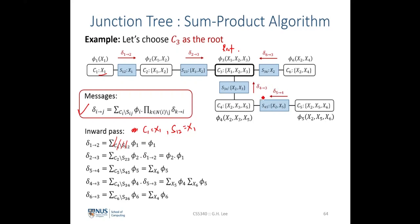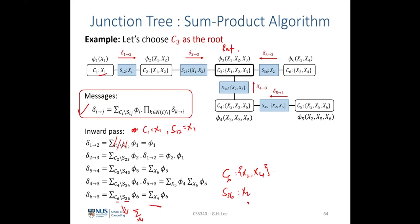For the message delta_6,3 from clique C6 towards C3: C6 contains x2 and x4, and the subset S3,6 linking C6 and C3 is just x2. So we marginalize away x4 over the potential phi_6 of clique C6, giving us the resulting term. You should verify that all the other upward messages are correct.